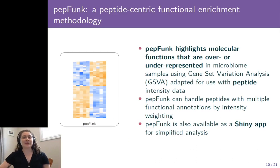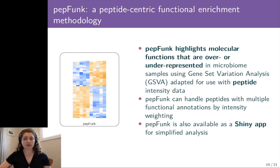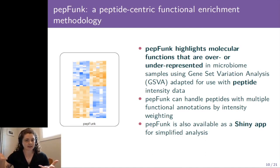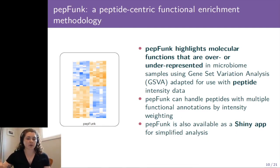To do this, we created PEPFUNC, a peptide-centric functional enrichment methodology. PEPFUNC highlights molecular functions that are over or underrepresented in microbiome samples, and we do this using an adapted gene set variation analysis that was modified for use with peptide intensity data. What's great about PEPFUNC is it can also handle peptides with multiple functional annotations by weighting the intensity of each peptide — and this is very common in microbiome samples. PEPFUNC is also available as a Shiny app for simplified analysis or for biologists who are not as comfortable with computational tools.